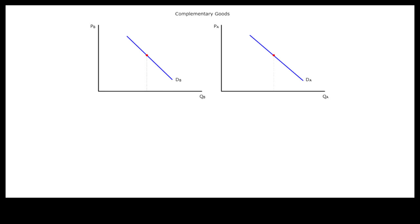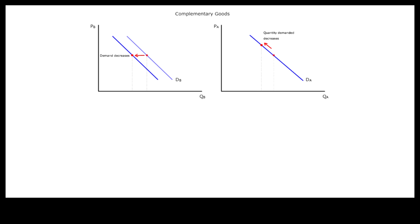A price increase in good A, on the other hand, will lead to a decrease in quantity demanded for good A, and a decrease in demand for good B.